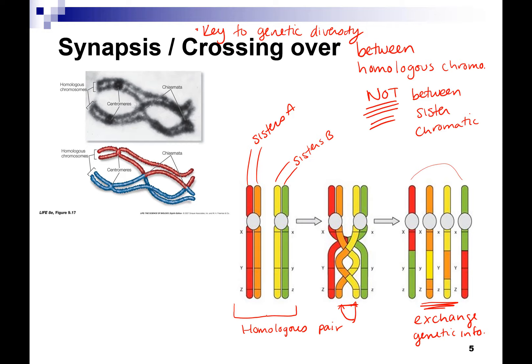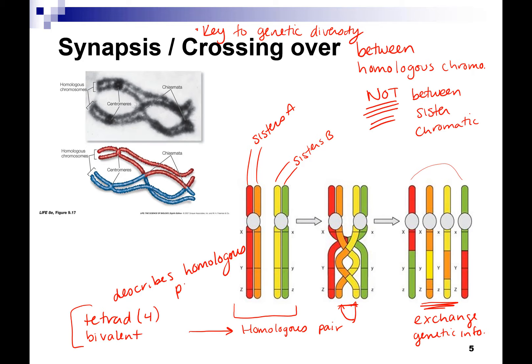A couple more terms: when you pair up a homologous pair, this is also called a tetrad — which means four — or bivalent, which means these two sister chromatids are coming together in their homologous pairs. These terms basically mean the same thing; they just describe homologous pairs lining up for crossing over.